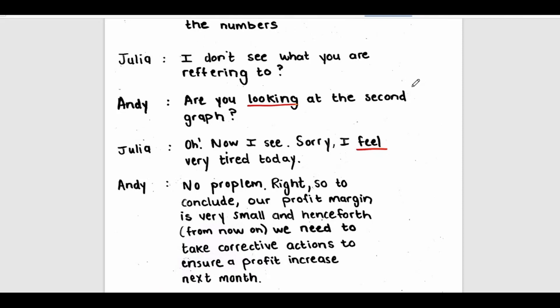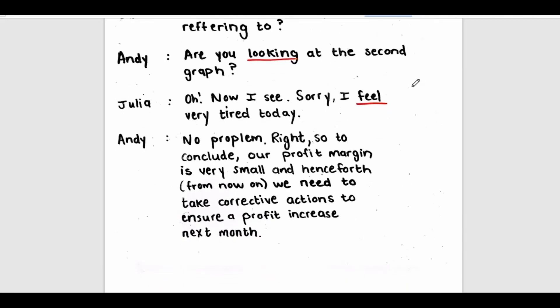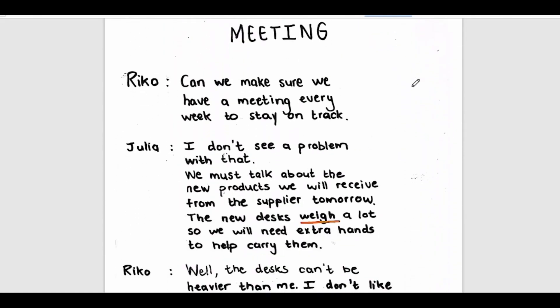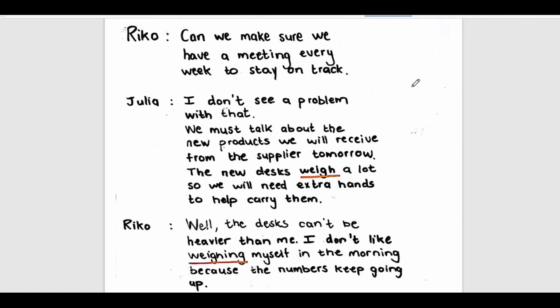No problem. So to conclude, our profit margin is very small and henceforth, from now on, we need to take corrective actions to ensure a profit increase next month. Can we make sure we have a meeting every week to stay on track? I don't see a problem with that. We must talk about the new products we will receive from the supplier tomorrow. The new desks weigh a lot, so we will need extra hands to help carry them.